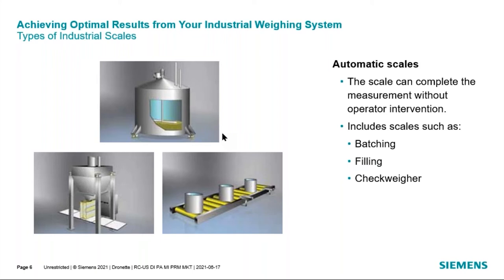Checkweighers are also considered automatic scales. With a checkweighing system, you have a conveyor that transports discrete items — packages of dish detergent or packages of meat. To install a checkweighing system on a roller conveyor, you cut the conveyor in a section long enough to contain a single package and place that section on load cells. The scale electronics determine when the package is completely on the scale as it moves down the conveyor — either via a peak-hold meter or photoeyes to monitor when the package is completely on it.